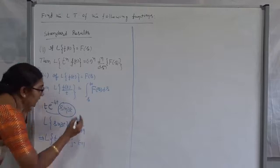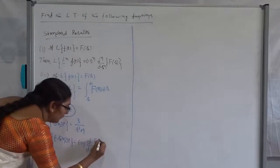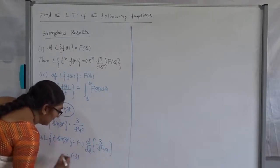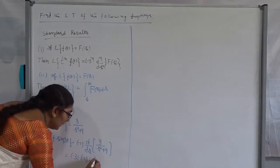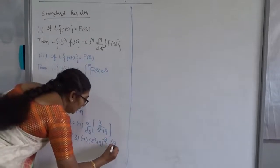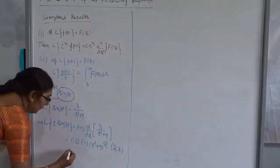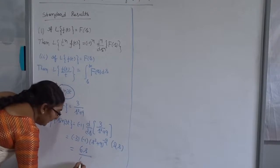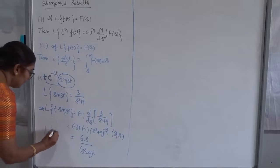The power of t is 1, so we differentiate once: it is (-1) to the power of 1 times the first derivative of F(s), where F(s) = 3 / (s² + 9). Differentiating: keep the minus as a constant, apply the chain rule on (s² + 9) — we get minus 3 times (s² + 9) to the power of minus 2, times 2s. Simplifying, 3 × 2s = 6s, and minus times minus gives plus. So the Laplace Transform of t times sine 3t is 6s divided by (s² + 9) squared.